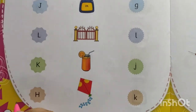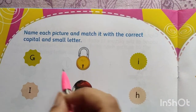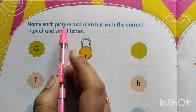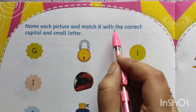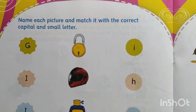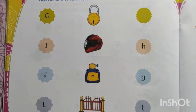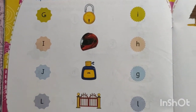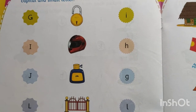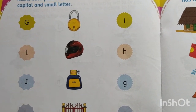The next page, page number 26. Here is given: name each picture and match it with the correct capital and small letter. Here you have to give the name of the pictures at first, then after you match with the correct capital and small letter.